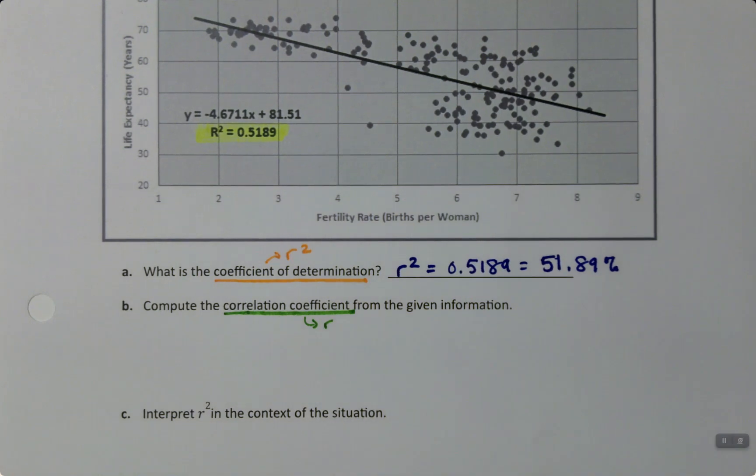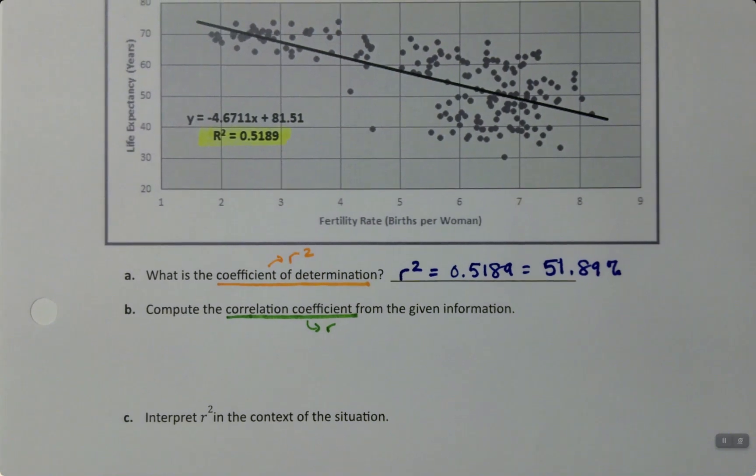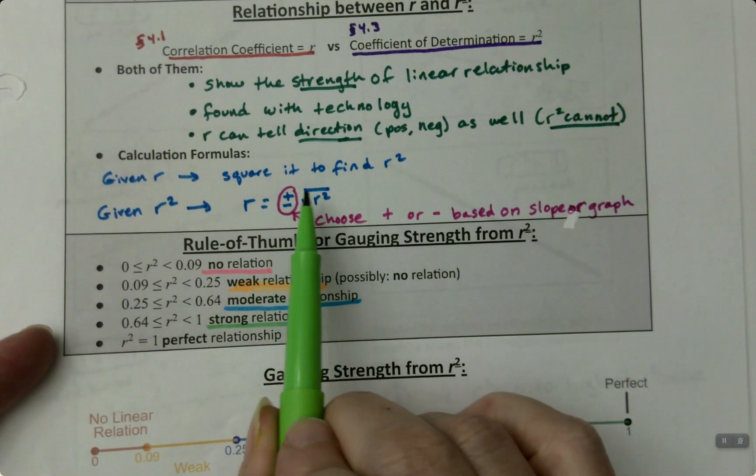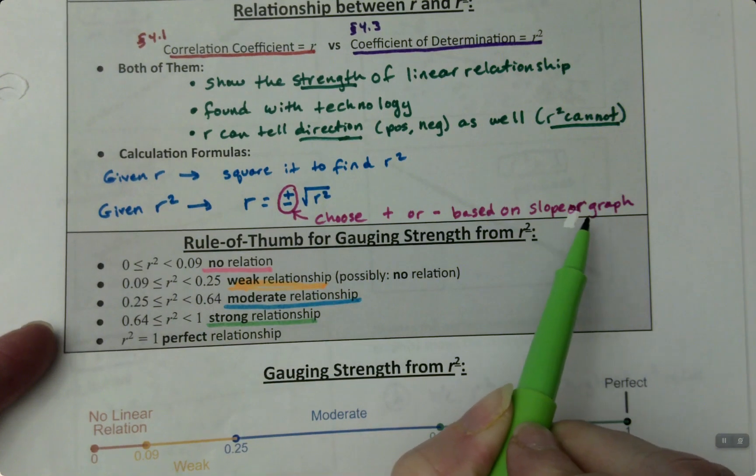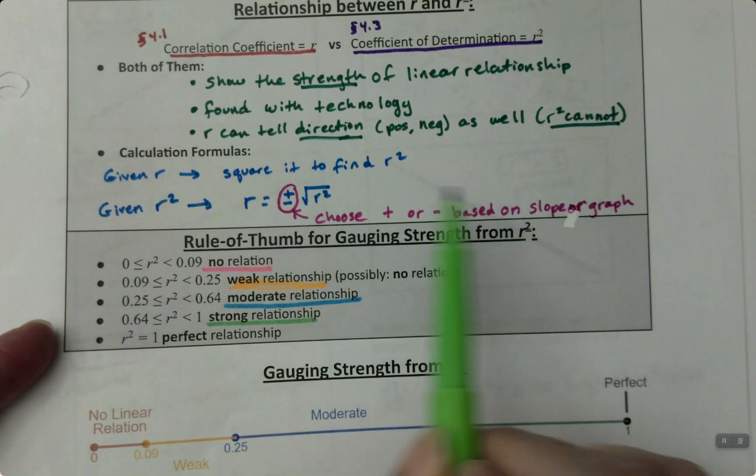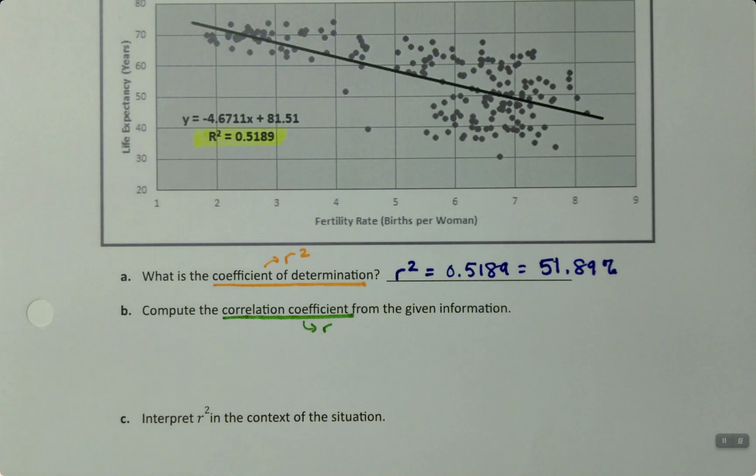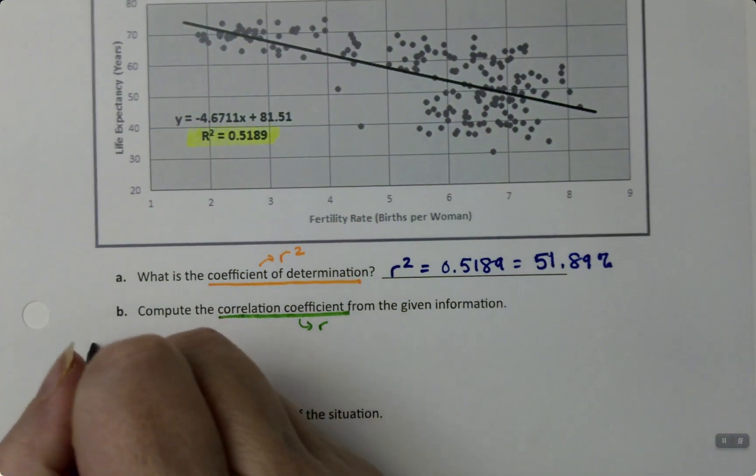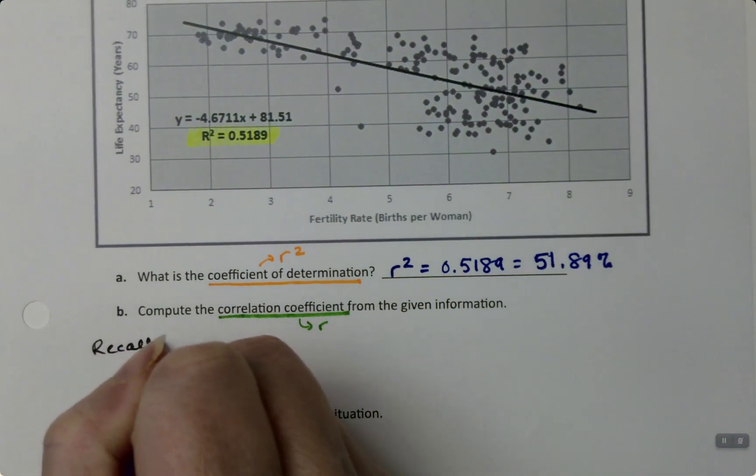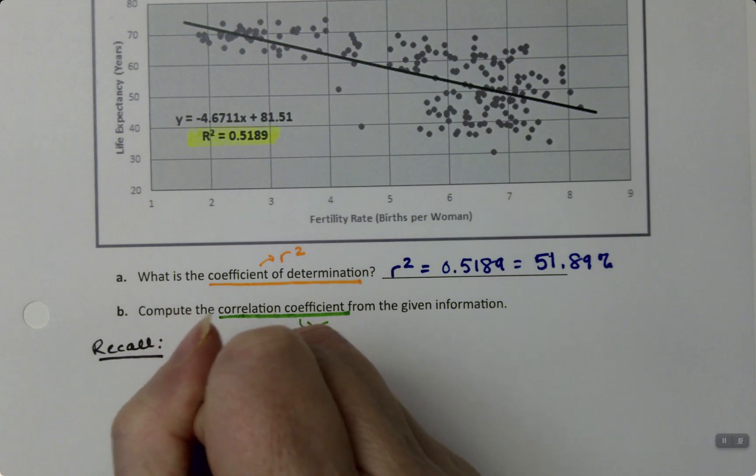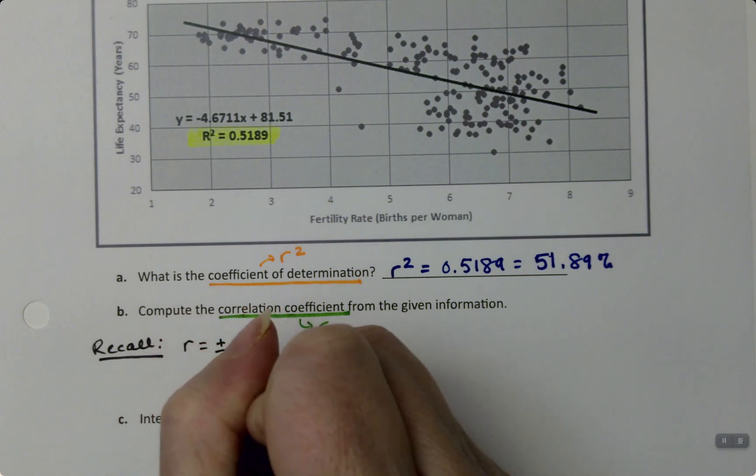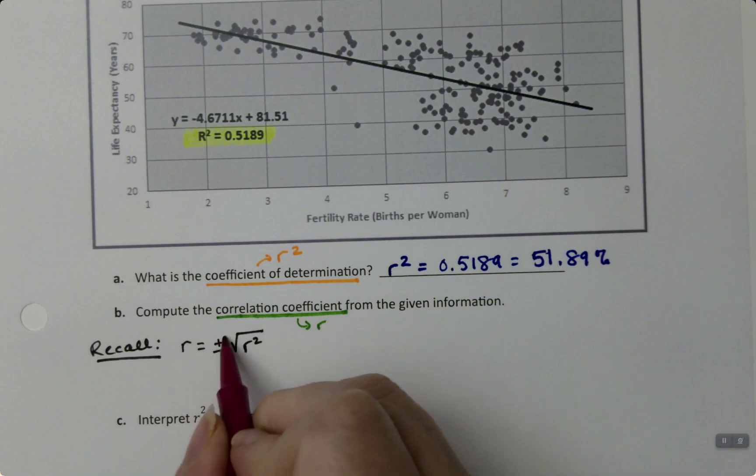Well, R is just the square root of R-squared. I mean, that's all there is to it. But it is plus or minus. We have to choose the correct one. It was mentioned right here. So we have to choose the correct one based on the slope of the graph, right? Slope of the graph, but we have both. So we're going to write that down. So recall that R is plus or minus the square root of R-squared, and we have to choose based on the slope.